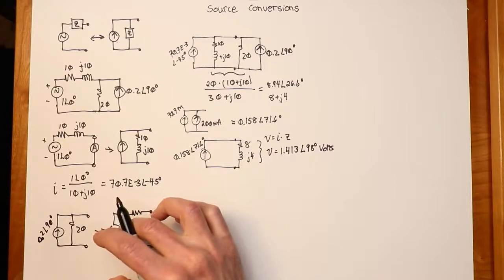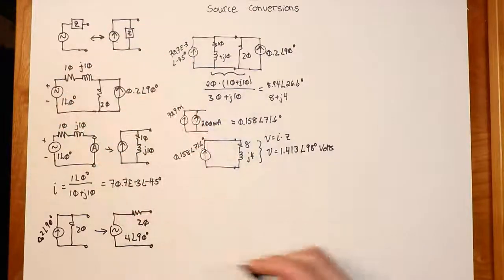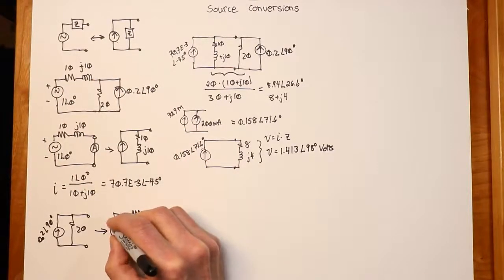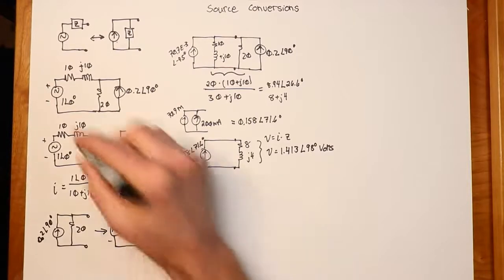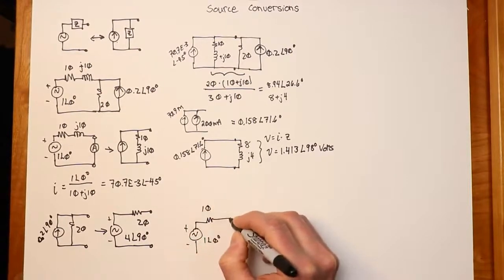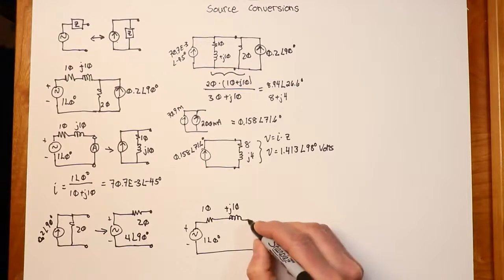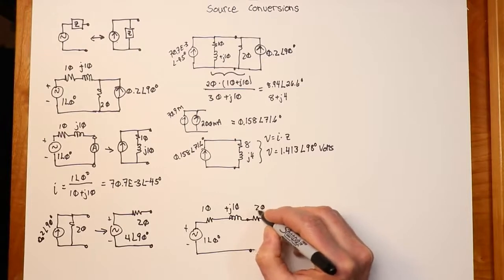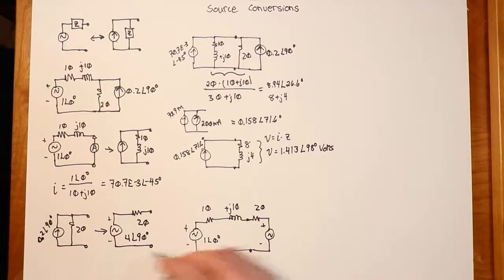Now I can take that, put it back in with the original circuit — similar to what we did over here. Here's the original left-hand side. The current's going up, so this is plus to minus top to bottom. So here's the first source, the 1 at 0, then 10 plus j10, and here's the converted part: the 20 ohm in series with the new source, which is 4 at 90 degrees.